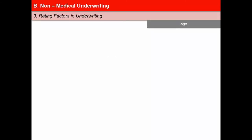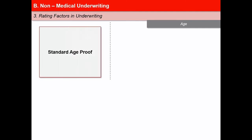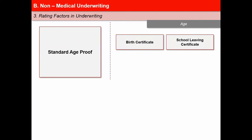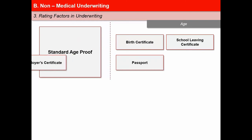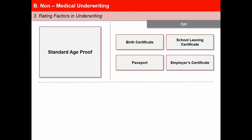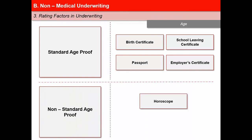The mortality risk is closely related to age, so the underwriter needs to be careful while considering insurance for people of advanced age. An important part of underwriting is admission of age after verifying proof of age. There are two types of age proofs: standard and non-standard. Standard age proofs — normally issued by a public authority — include the birth certificate, school leaving certificate, passport, and employer's certificate. Where such proofs are not available, the proposer may be asked to bring a non-standard age proof, such as a horoscope or a self-declaration.